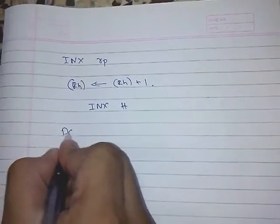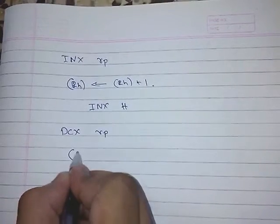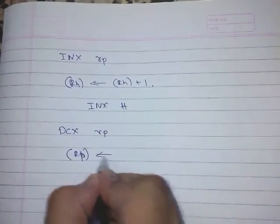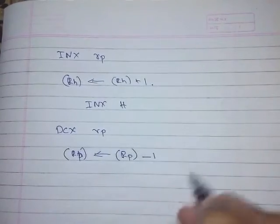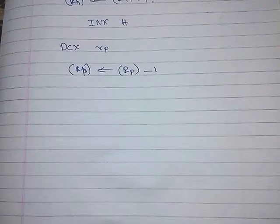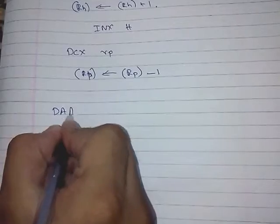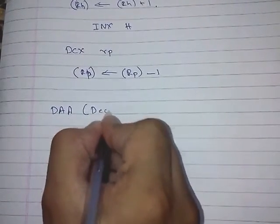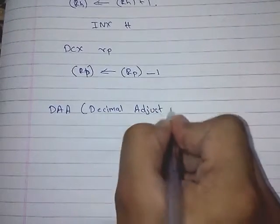Similarly, DCX RP will decrement the register pair by 1. One more thing this instruction set offers is DAA — Decimal Adjust Accumulator.